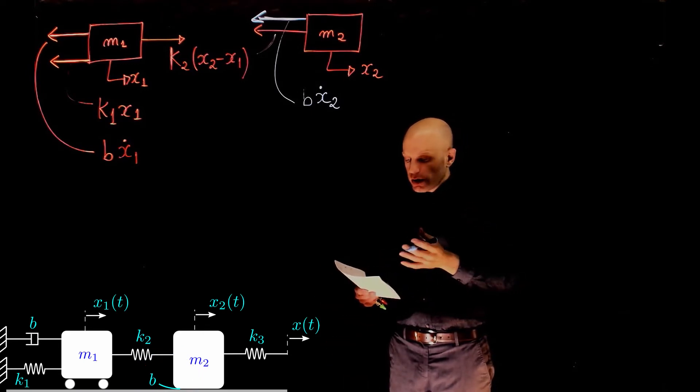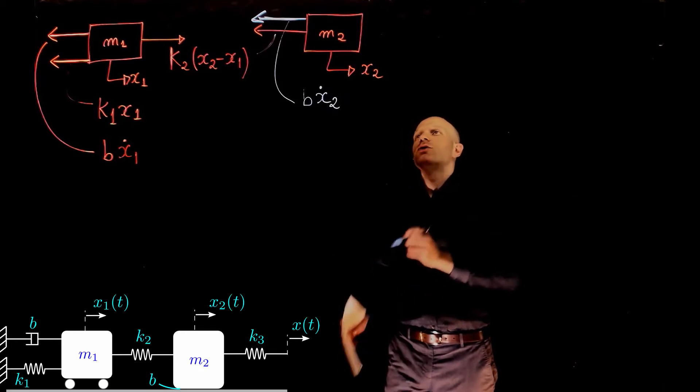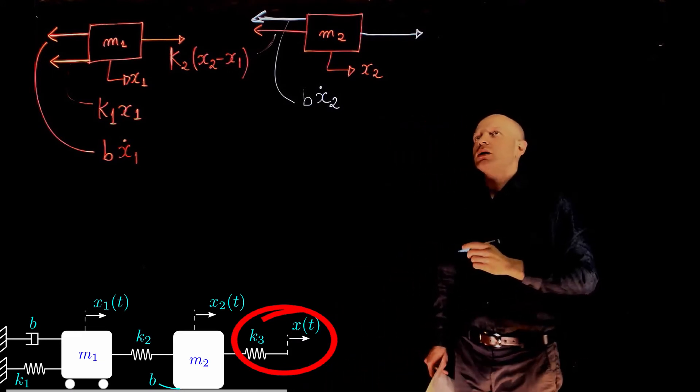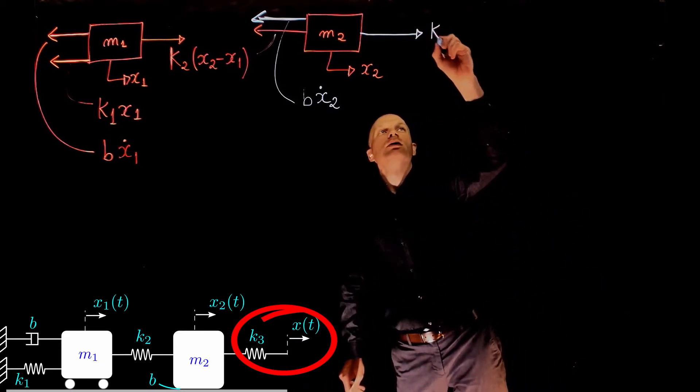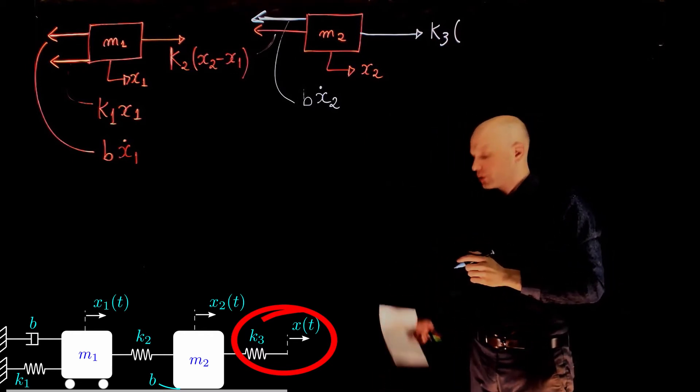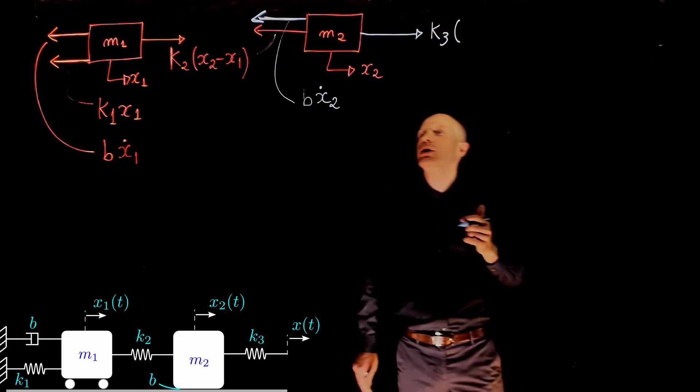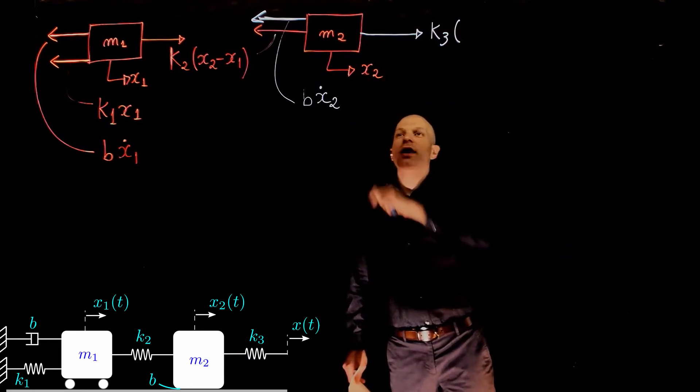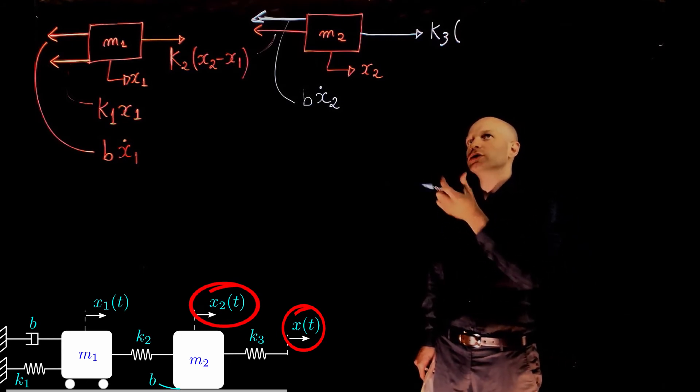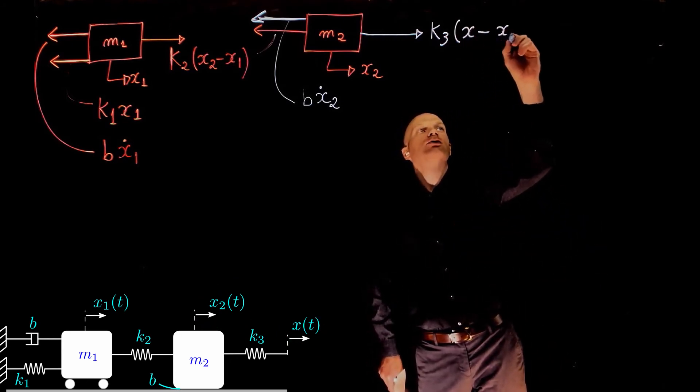There is now another force applied to mass m2 because of that spring k3. We have a force applied here, and that force is k3 times the relative displacement of the spring. We see now on one end we have x, the displacement of one end of the spring, and on the other end we have x2, which is the displacement of mass m2. So the total displacement of the spring is x minus x2.